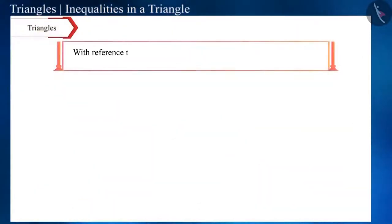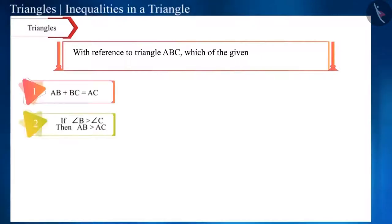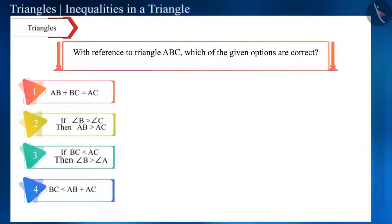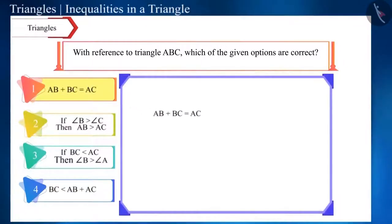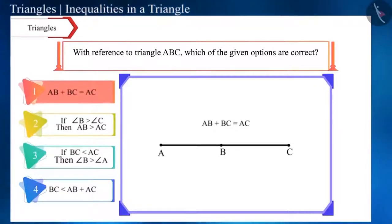With reference to triangle ABC of the given options, which option is correct? In the first option, if the sum of AB and BC is equal to AC, it will form a line and not a triangle. This means that this option is incorrect.